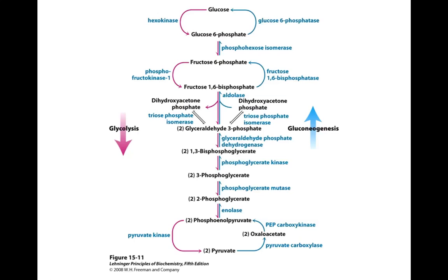This slide shows the competing pathways of glycolysis and gluconeogenesis — glycolysis in pink, gluconeogenesis in blue. This is a great slide to review. There are steps we have to overcome or bypass from glycolysis: the first is the conversion to oxaloacetate, another utilizes fructose-1,6-bisphosphatase, and the final one is glucose-6-phosphatase.